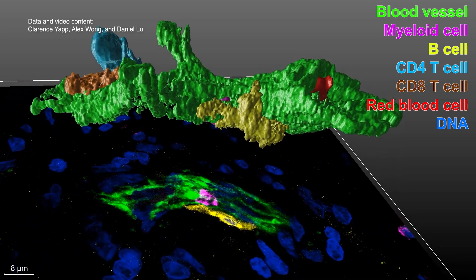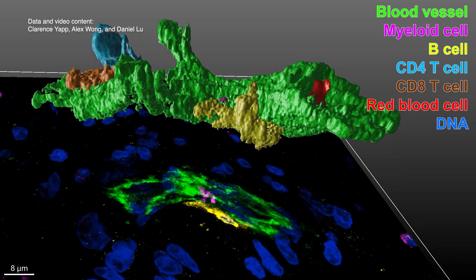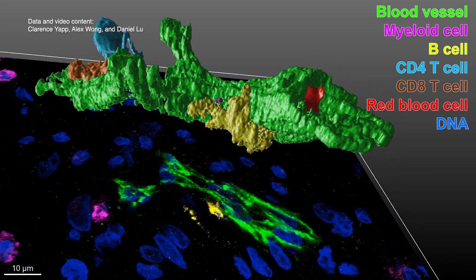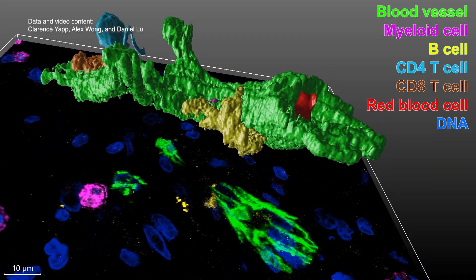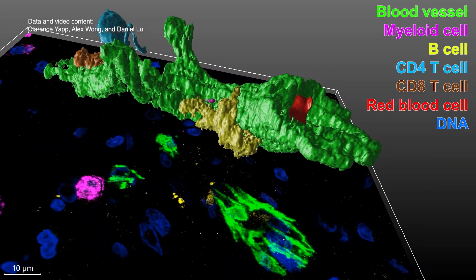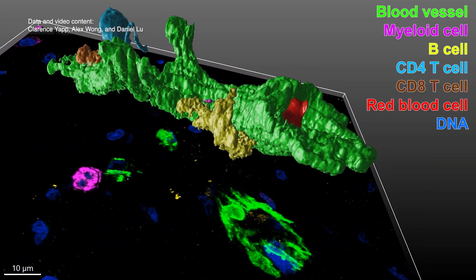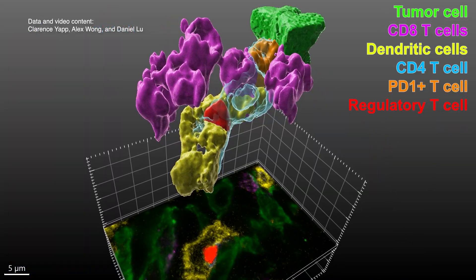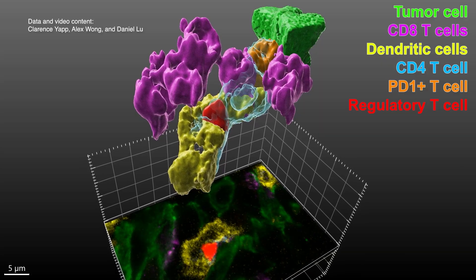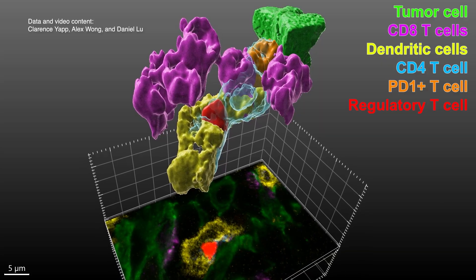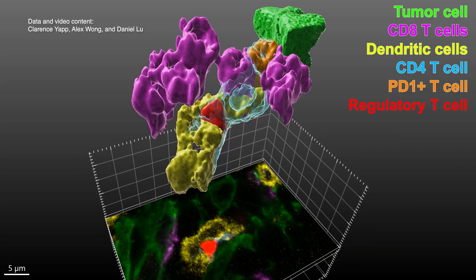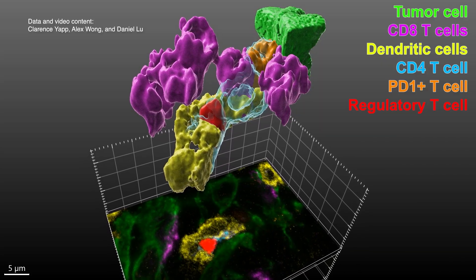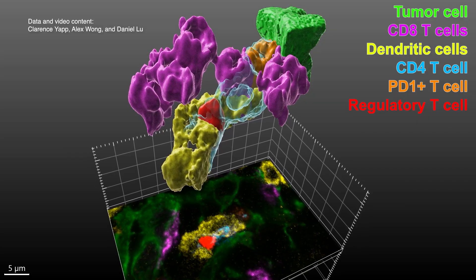Researchers in the Laboratory of Systems Pharmacology previously developed an imaging technique called cyclic immunofluorescence, or SI-CIF, that allows them to label over 100 proteins at a time in a human tissue sample. They used SI-CIF to precisely categorize the different types of immune cells and tumor cells present in a sample.